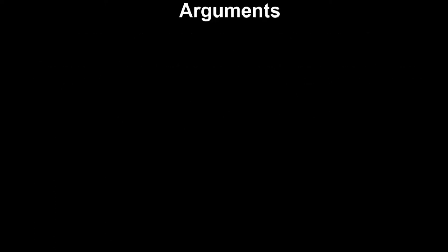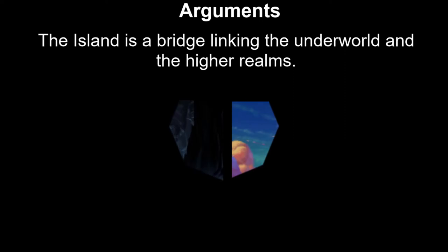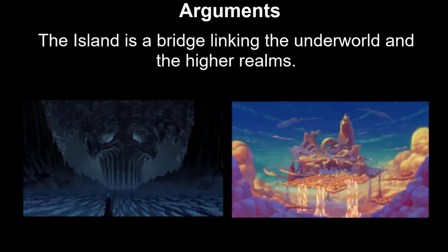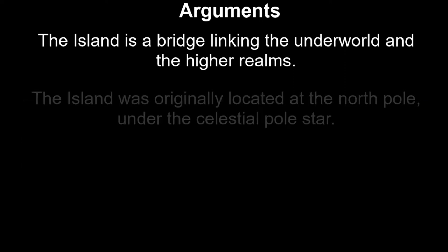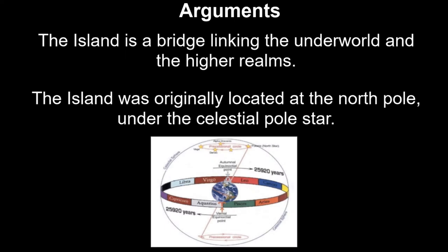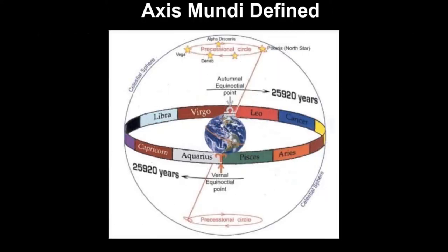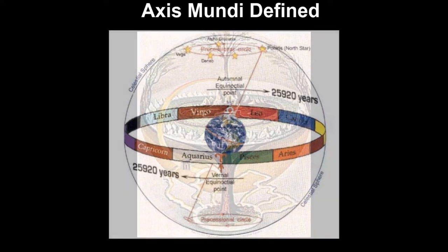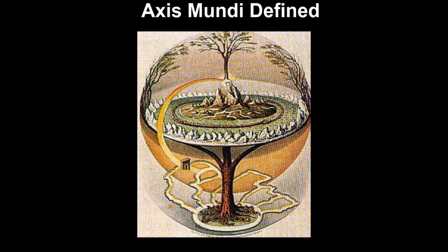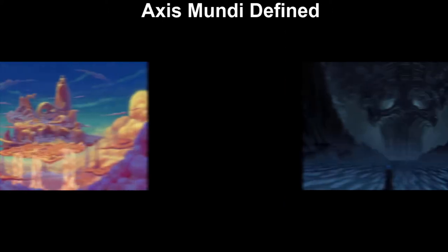My arguments are: the island is a bridge linking the Underworld and the Higher Realms. The island was originally located at the North Pole, under the Celestial Pole Star of the time. According to Wikipedia, the term Axis Mundi, also called the World Axis, World Pillar, or World Tree, was extended to refer to any mythological concept representing the connection between Heaven and Earth, or the Higher and Lower Realms.